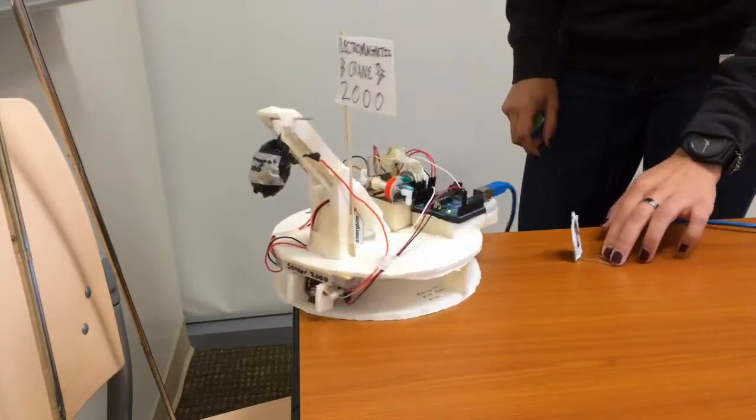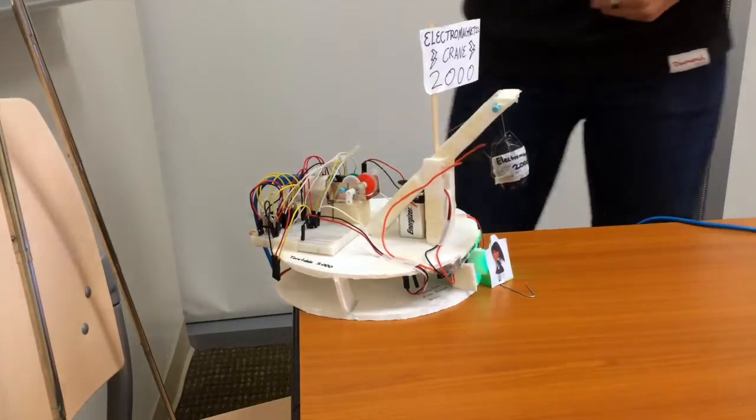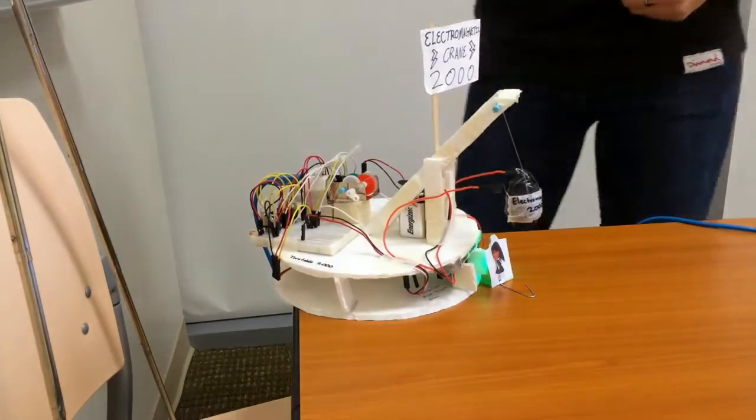Let's go ahead and see the electromagnetic crane 2000 in action. We'll start by placing one of the people that has a green back. Make sure to turn on the electromagnet.